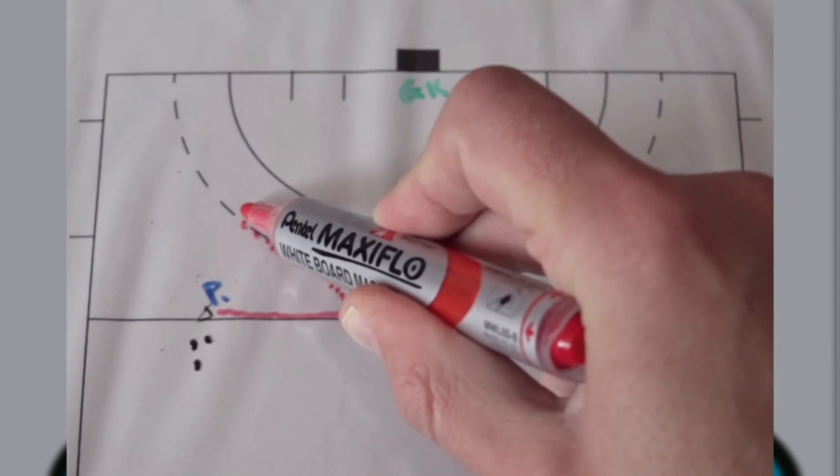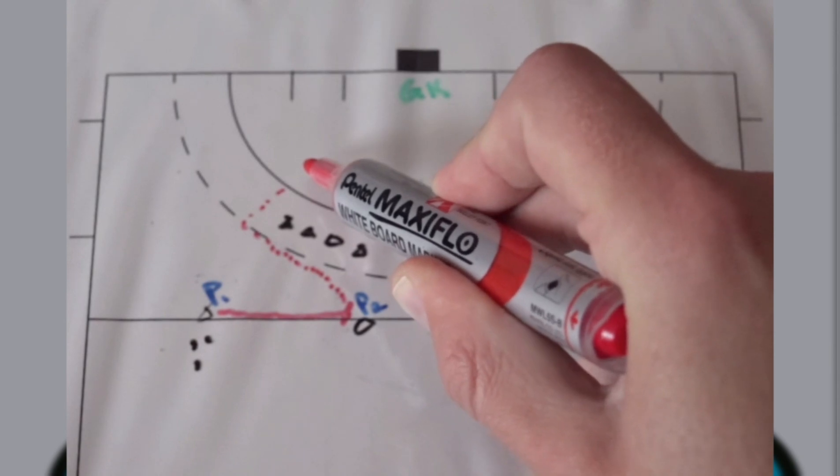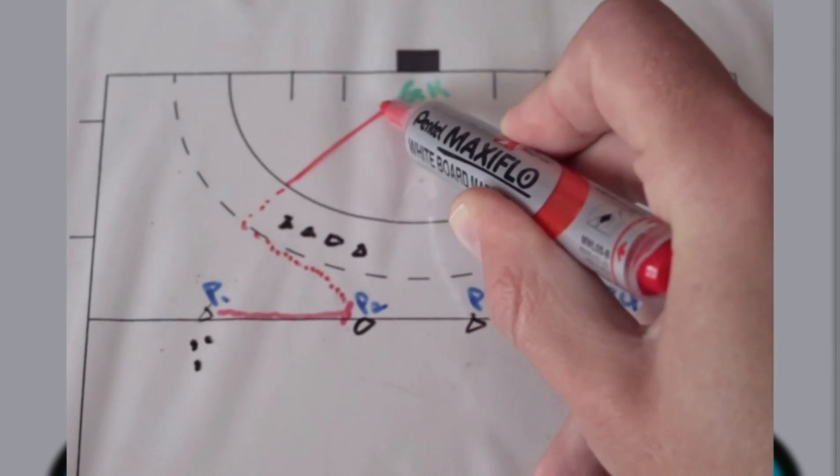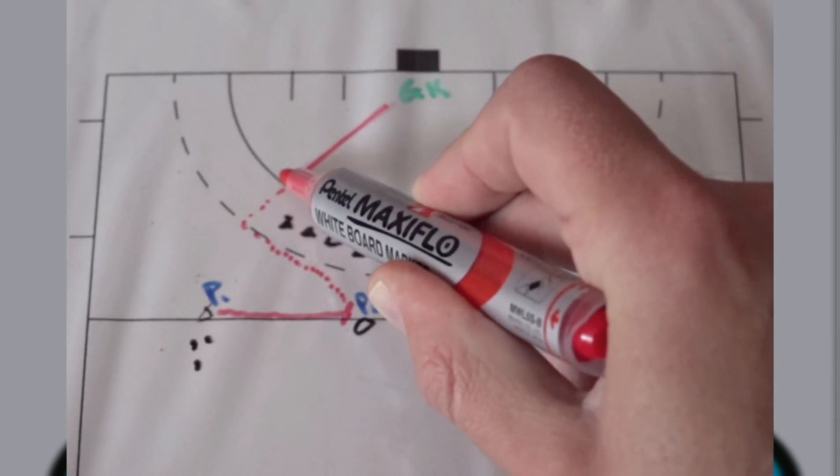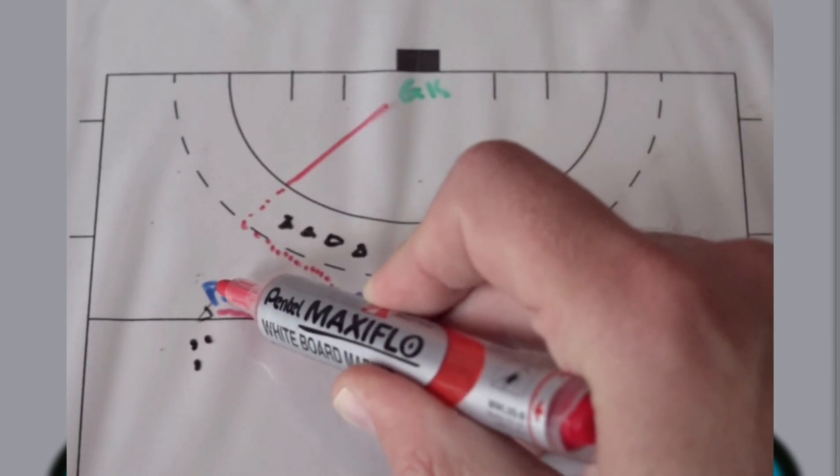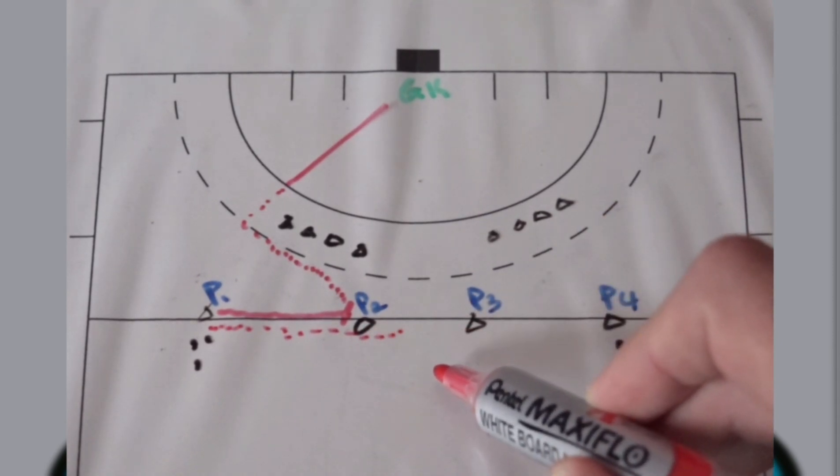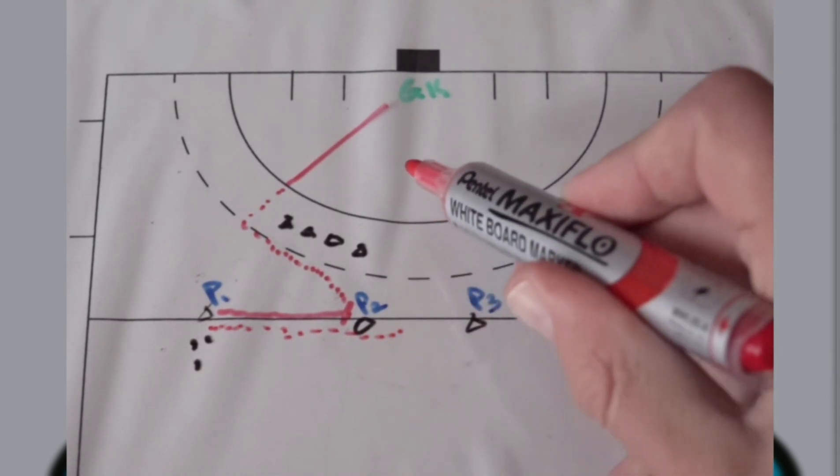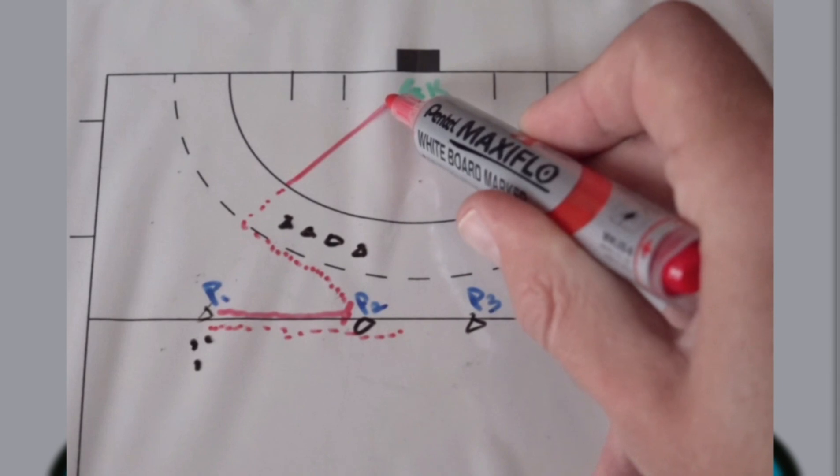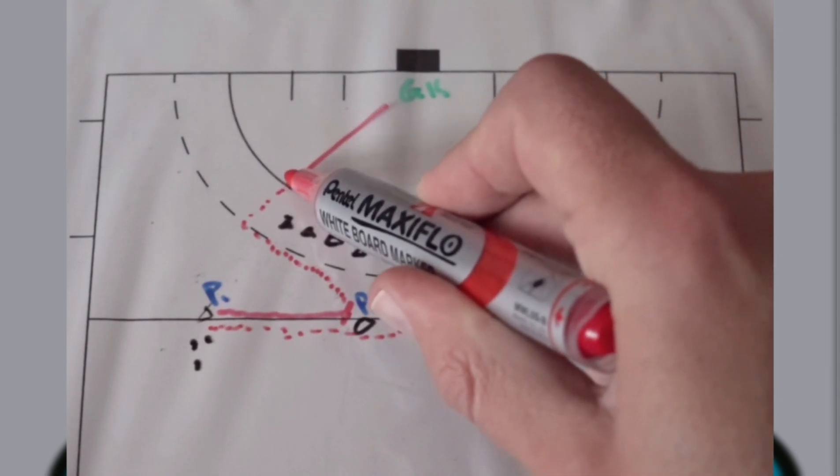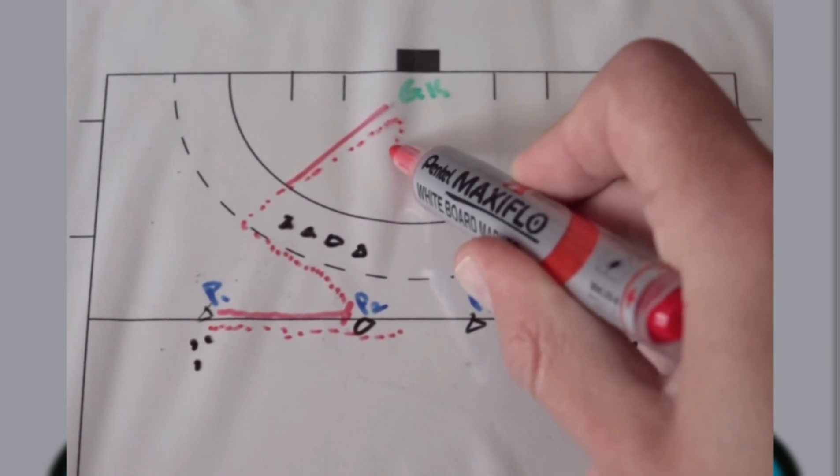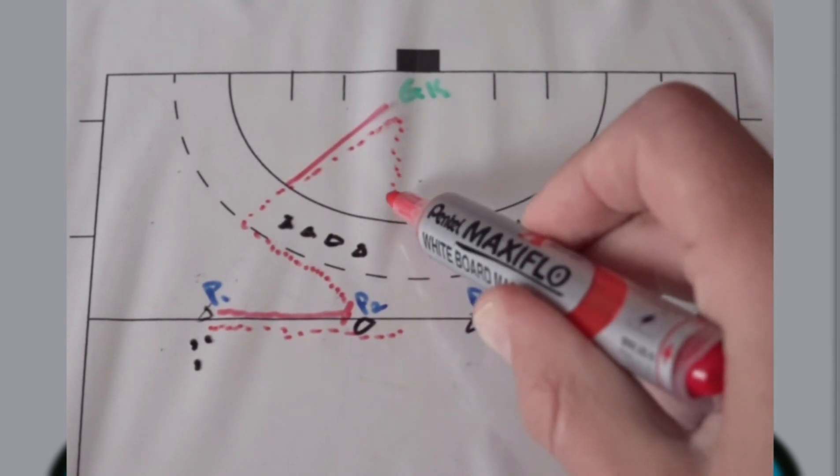Then as soon as they get past these cones they're going to go towards the circle and take a reverse stick shot. As soon as this reverse stick shot has been taken, player one will take another ball and start dribbling towards this cone. Player two will re-lead infield and then out to the top of the D.